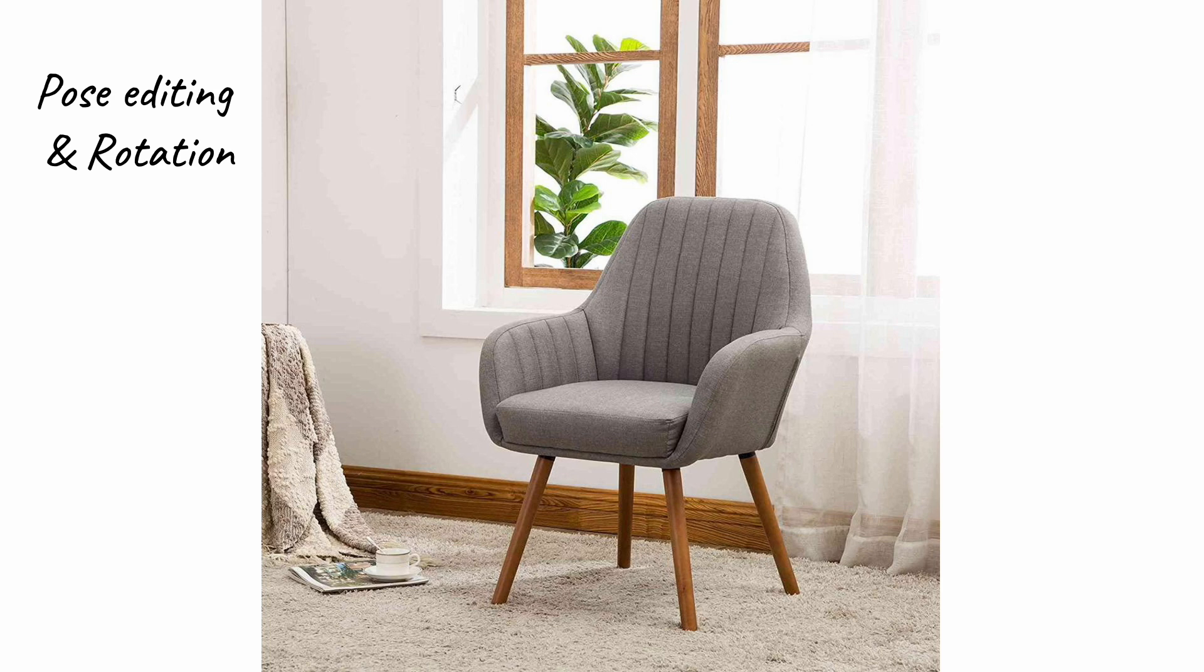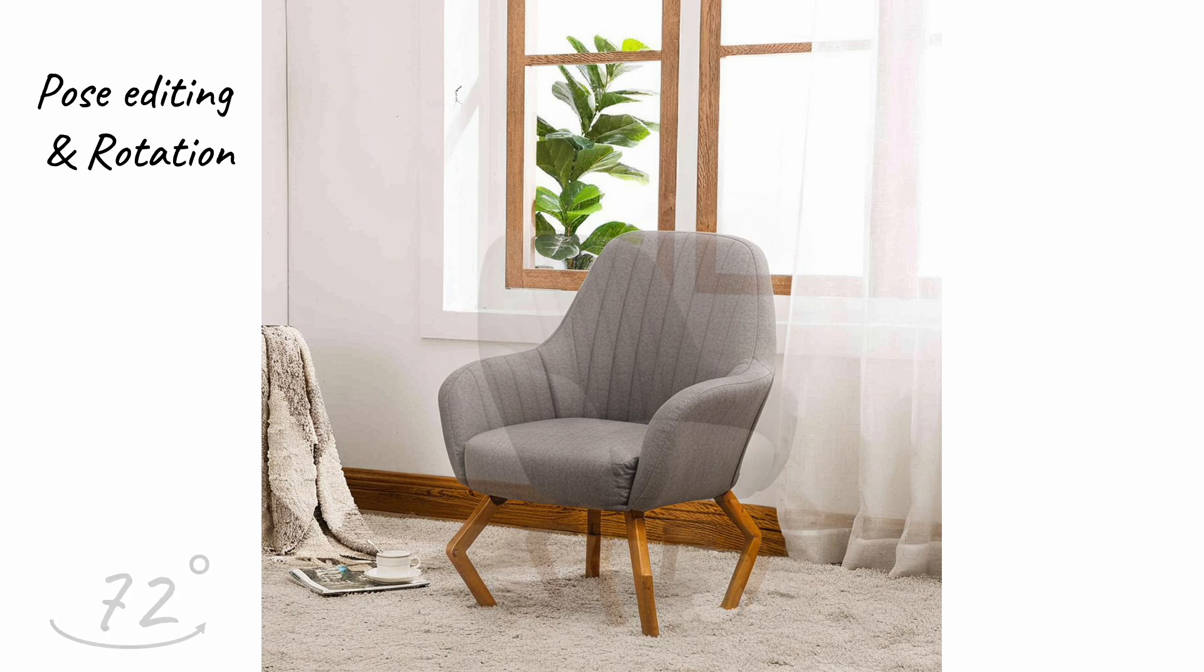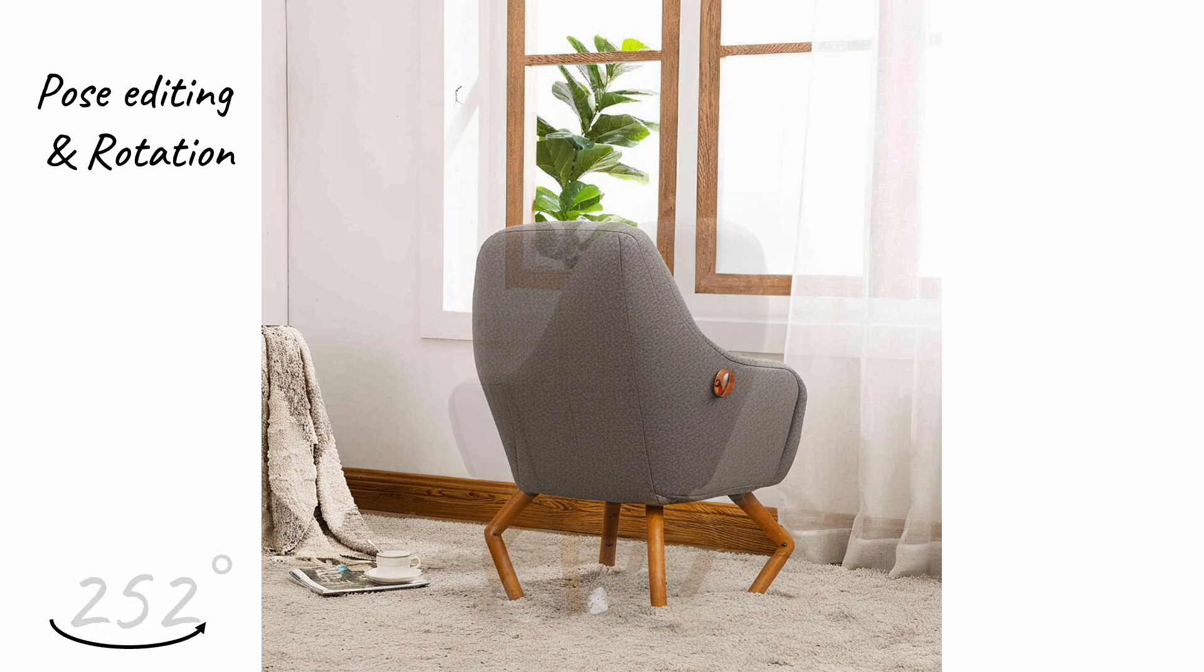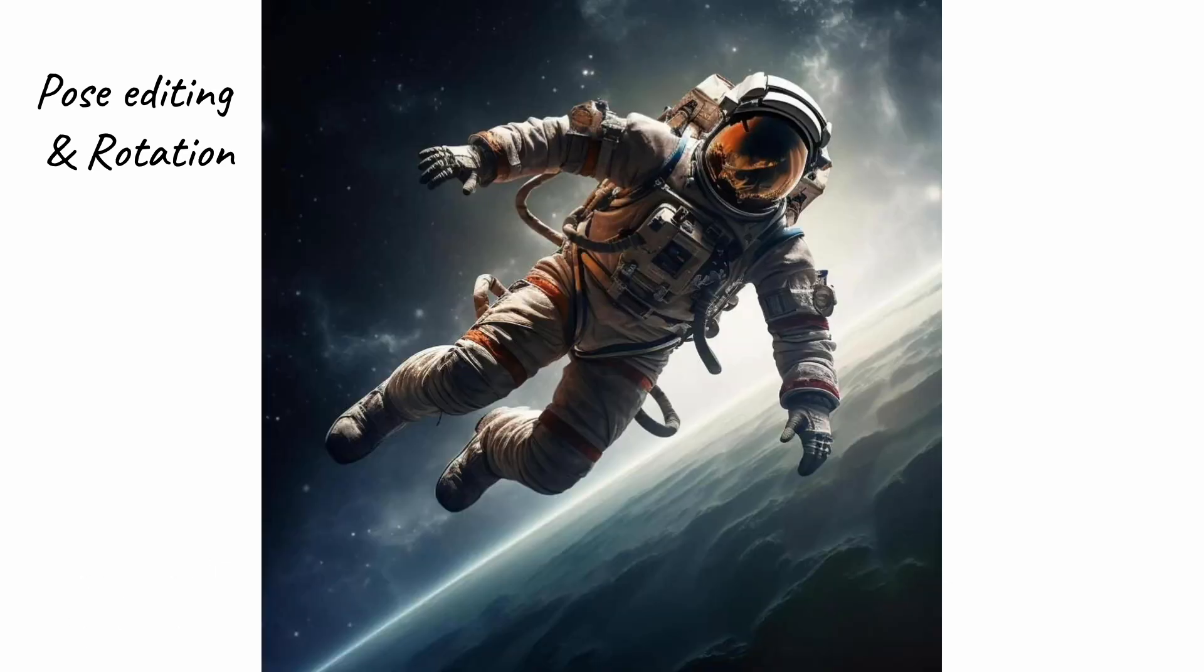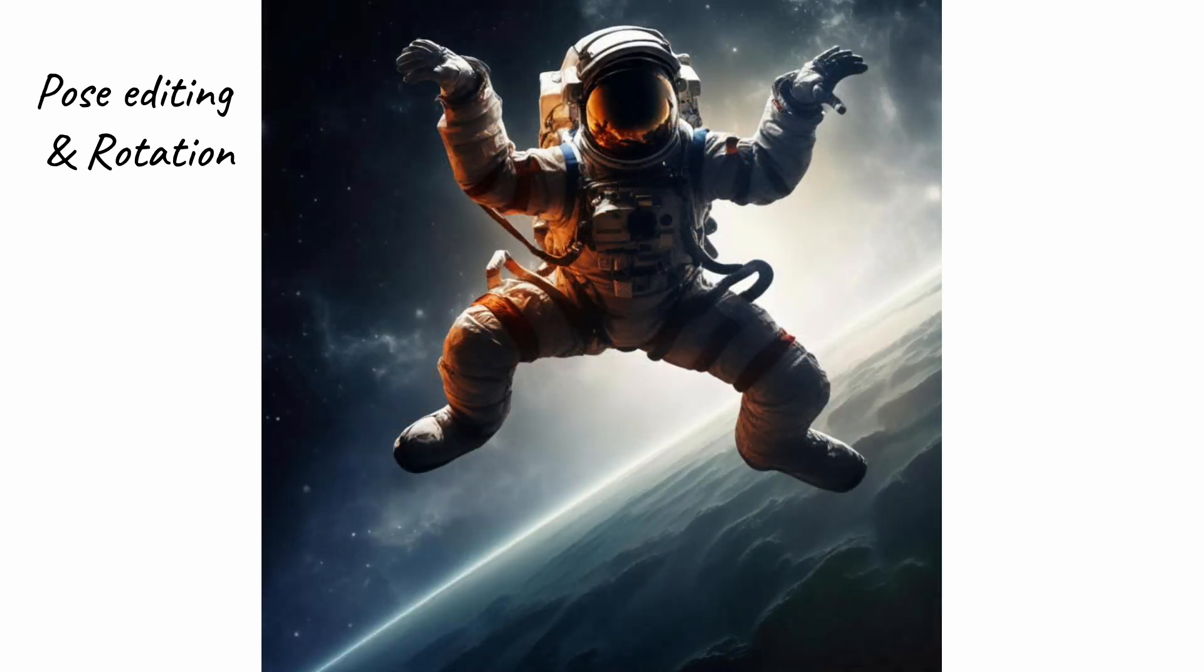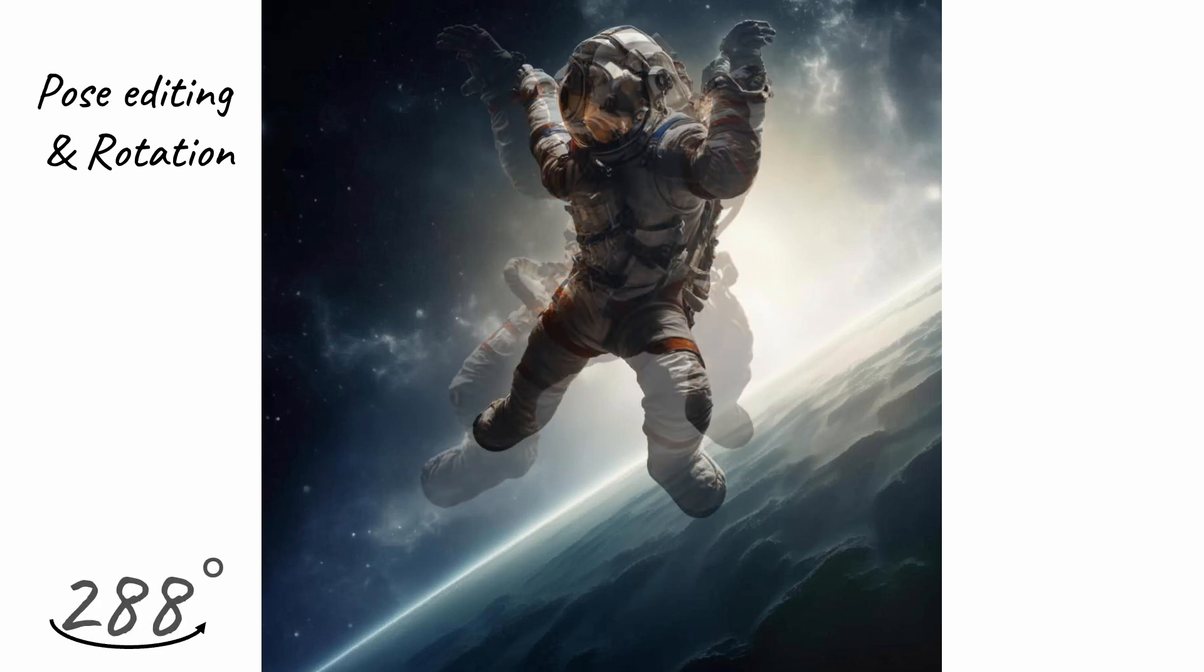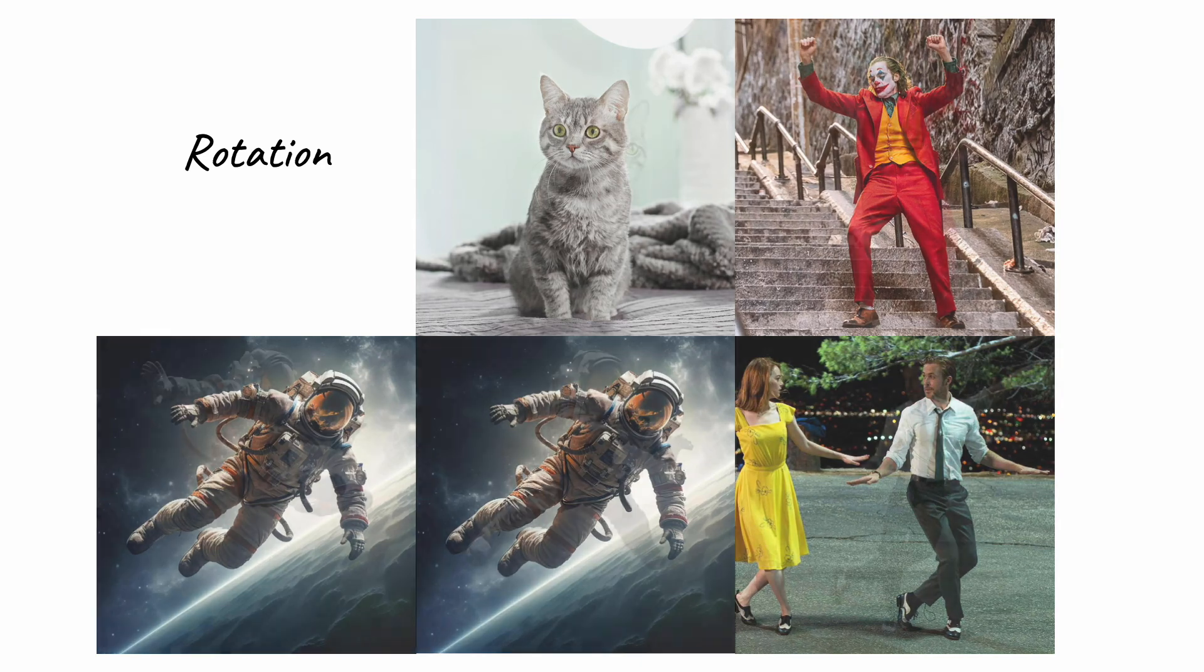With the 3D model, we have the ability to also do rotations. For example, we can bend the leg of a chair and then rotate the entire chair by certain degrees. Here is another example where we adjust the pose of an astronaut and rotate them by a specific degree. Here are more results.